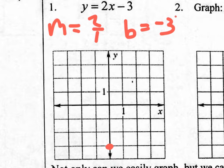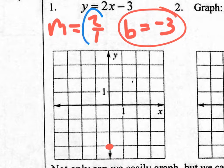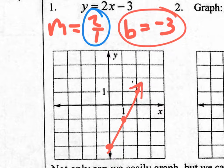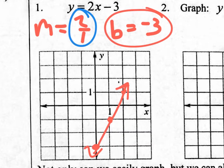I put a dot at negative 3 — that's my y-intercept. Now from that point I apply my slope. The slope here is rise 2, run 1, so from that dot I rise 2 and run 1 and put another dot right there. You can keep going with rise 2, run 1 to extend the line as far as you want. It's really that easy: go to your B value, go up 2 over 1, and draw your line — no math involved.